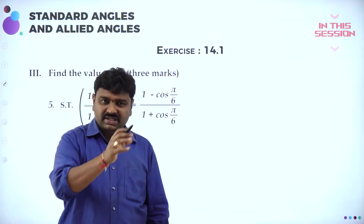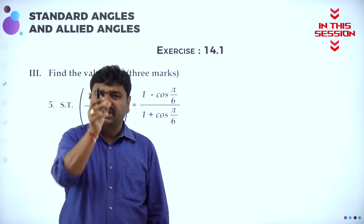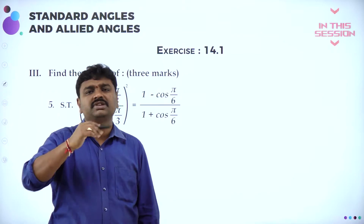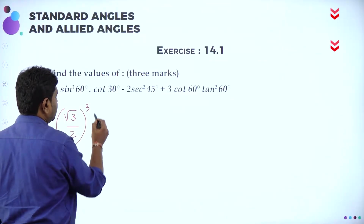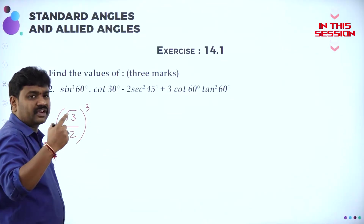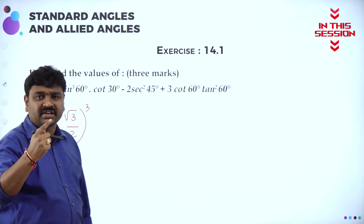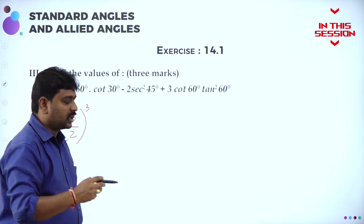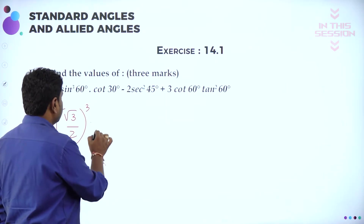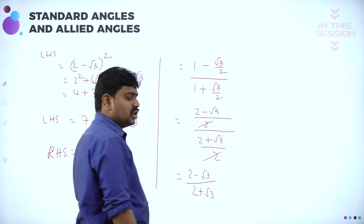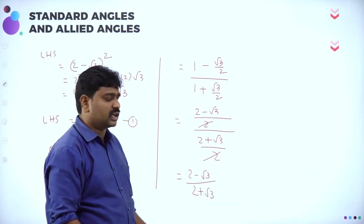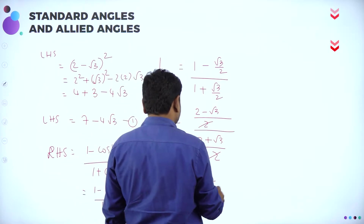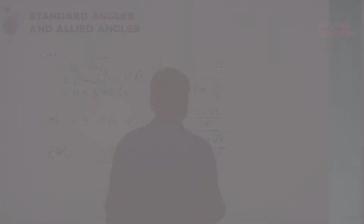Take LHS, arrive at a value; take RHS, arrive at a value — both should be same. Into cos 30, reciprocal of tan 30. tan 30 is 1/√3, cos 30 is √3. Problem: the denominator should not contain an irrational value, so rationalize this.